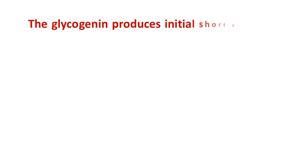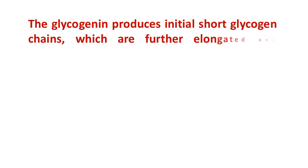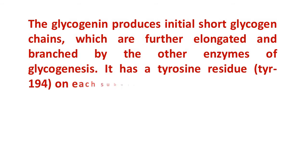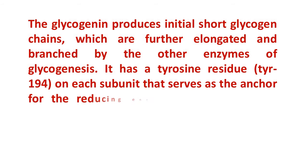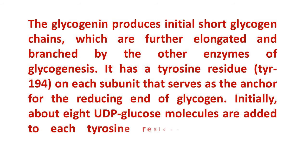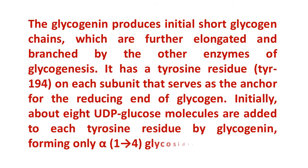Glycogenin creates initial short glycogen chains, which are then lengthened and branched by the other enzymes of glycogenesis. It has a tyrosine residue at location 194 on each subunit that serves as the anchor for the reducing end of glycogen. Initially, about 8 UDP-glucose molecules are added to each tyrosine residue by glycogenin, forming only alpha-1,4 glycosidic bonds.